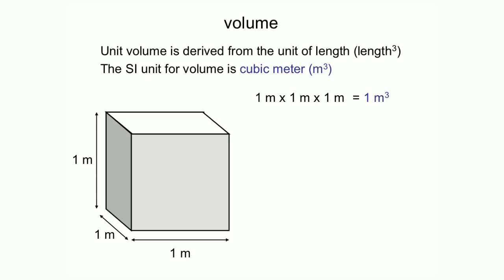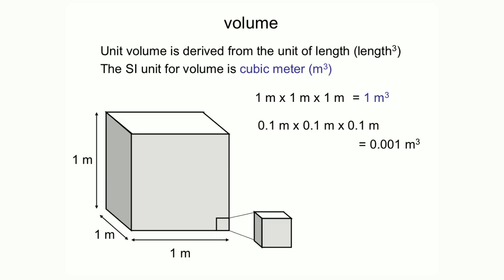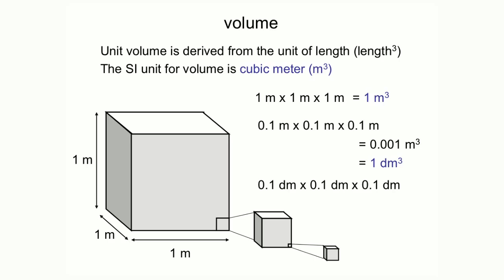Let's shrink the sides of this cube by 10 times. The volume of the smaller box will be 0.1 meter times 0.1 meter times 0.1 meter, and that equals 0.001 meter cubed. Because 0.1 meter equals a decimeter, the volume of the smaller box equals 1 decimeter cubed — a thousand times smaller than a meter cubed. Shrinking once more by 10 times, the volume equals 0.001 decimeter cubed, and because 0.1 decimeter equals a centimeter, the volume equals 1 centimeter cubed — a thousand times smaller than a decimeter cubed.